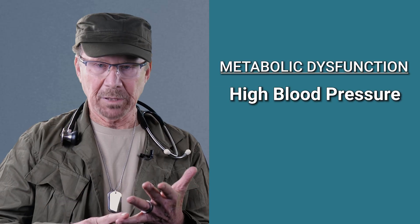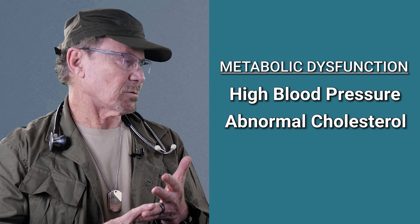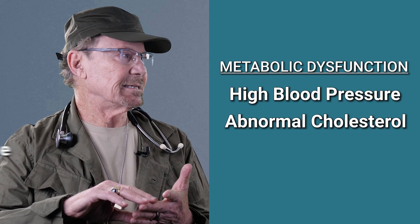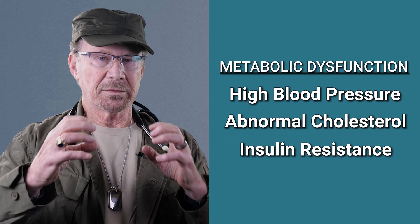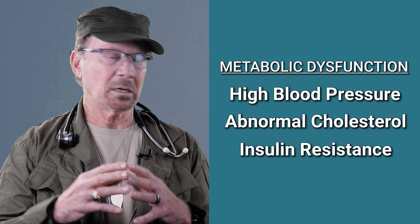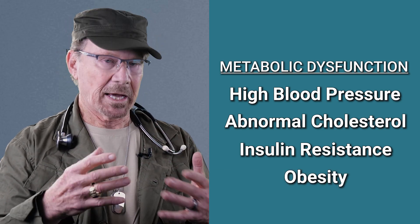It's a category of metabolic dysfunction, which includes high blood pressure, abnormal cholesterol levels — because cholesterol is fat that gets into the cells — type 2 diabetes and insulin resistance, and high glucose levels. The basic core problem is obesity. That's why people in this country who don't even have diabetes can have fatty liver. If you're overweight or obese, you're at high risk of having fat in your liver. But if you add diabetes on top of that, it elevates your risk even further.